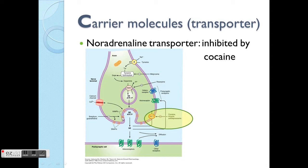The synaptic cleft is basically the space between the two neurons. The NE — norepinephrine — can float around in the cleft, though enzymes surround it and try to break it down. The NE can bind to its own receptors at neuron B.